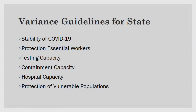The variance process requires meeting six criteria: stability of COVID-19 cases in the community, protection of essential workers, testing capacity, containment capacity, hospital capacity, and protection of vulnerable populations. We agree with these categories — there should be stability in disease prevalence before moving forward, employees should be protected, testing and hospital capacity are needed. We're proud that we moved forward early with alternate care site plans, and our hospitals are well equipped. We also led the region in developing shelter plans for vulnerable populations.